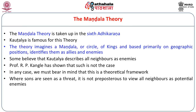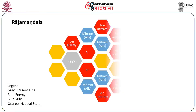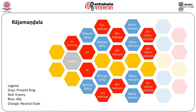The mandala of kings is depicted with a hexagonal diagram. The gray hexagon roughly in the center represents the Vijigishu — the would-be conqueror, the present king. The six hexagons immediately in contact with the gray one are the immediate neighbors. Three are shown in red (enemies, called Ari — Sanskrit for enemy) and three in orange or yellow (the neutral ones). All immediate neighbors are either enemies or have the potential to be enemies.